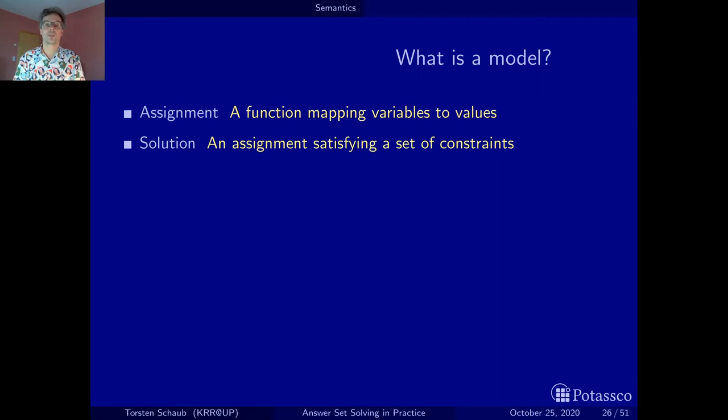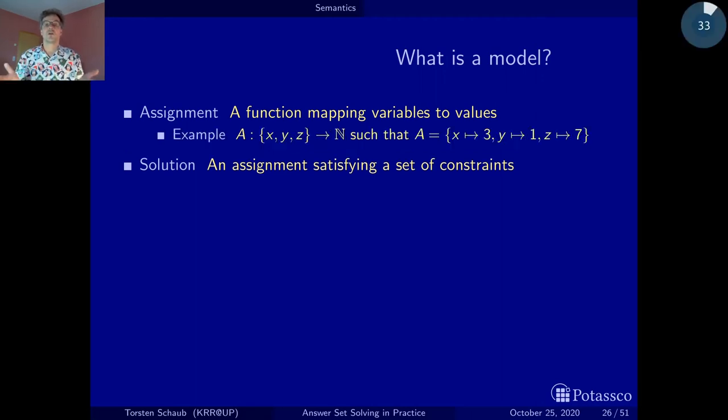Let's look at a very small example. We just look at functions that map variables x, y, z into a domain. Here I chose the integers. Here's a particular assignment now. This assignment assigns x to 3, y to 1, and z to 7. There are very many assignments that one can form over x, y, z mapping them into natural numbers. But now we want only those assignments that satisfy a problem.